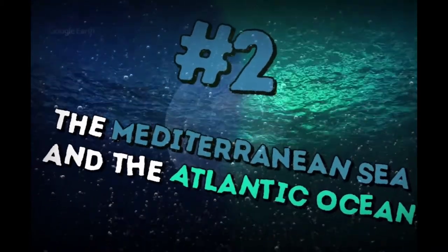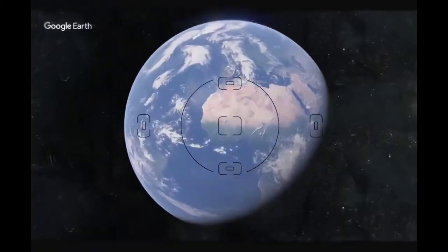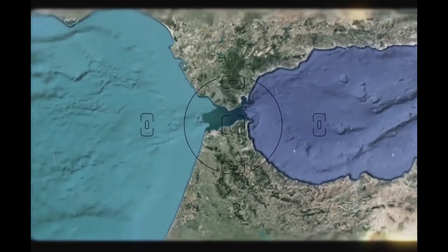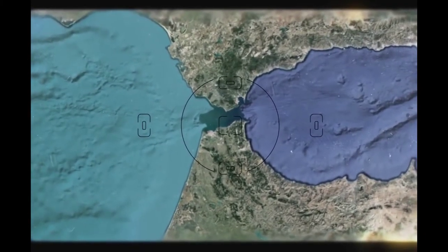The Mediterranean Sea and the Atlantic Ocean meet at the Strait of Gibraltar and have a different density and salinity, so their water does not mix too.